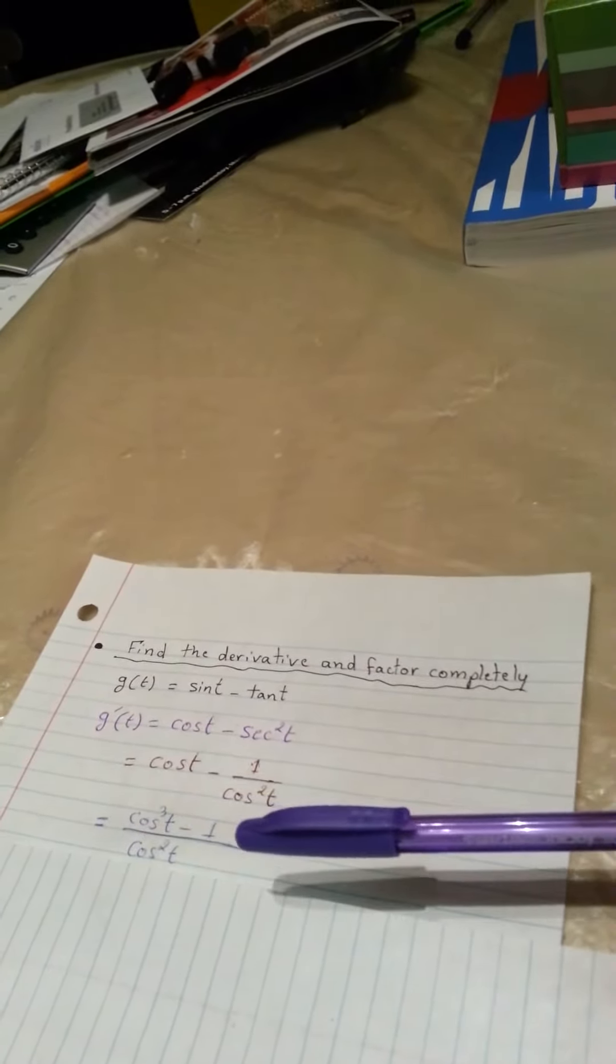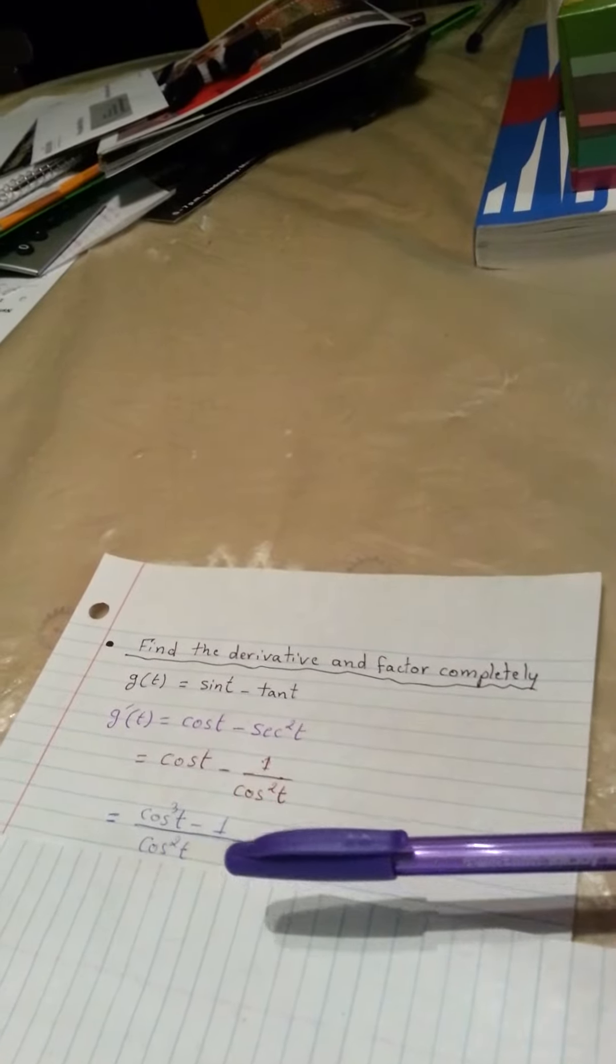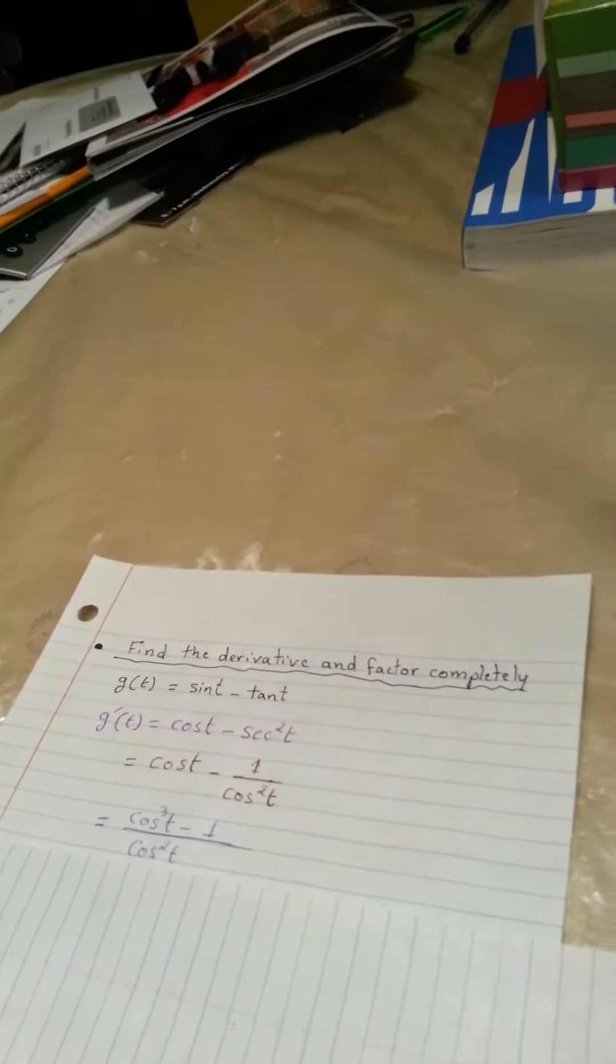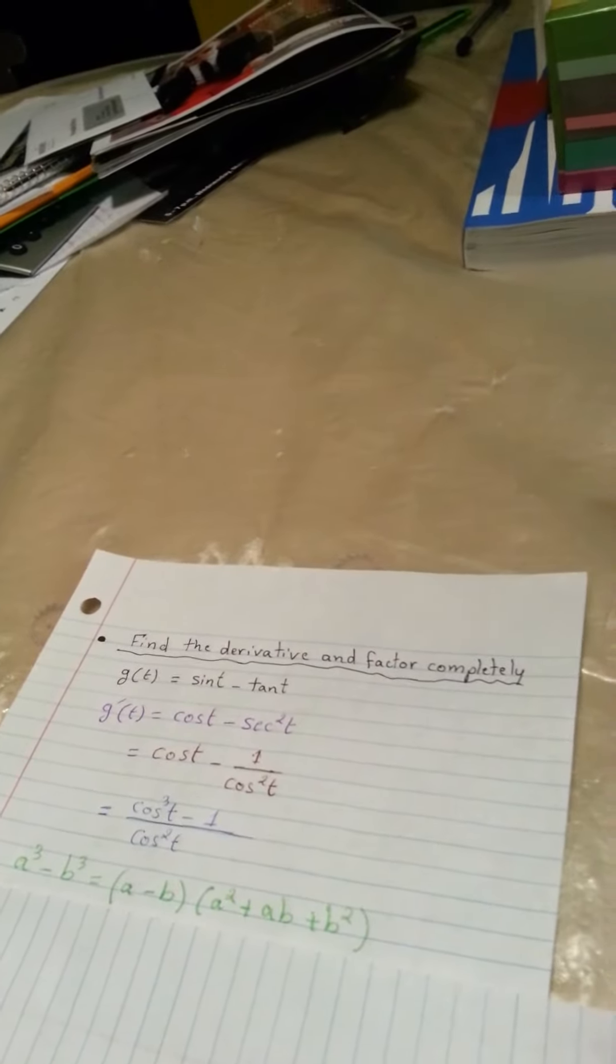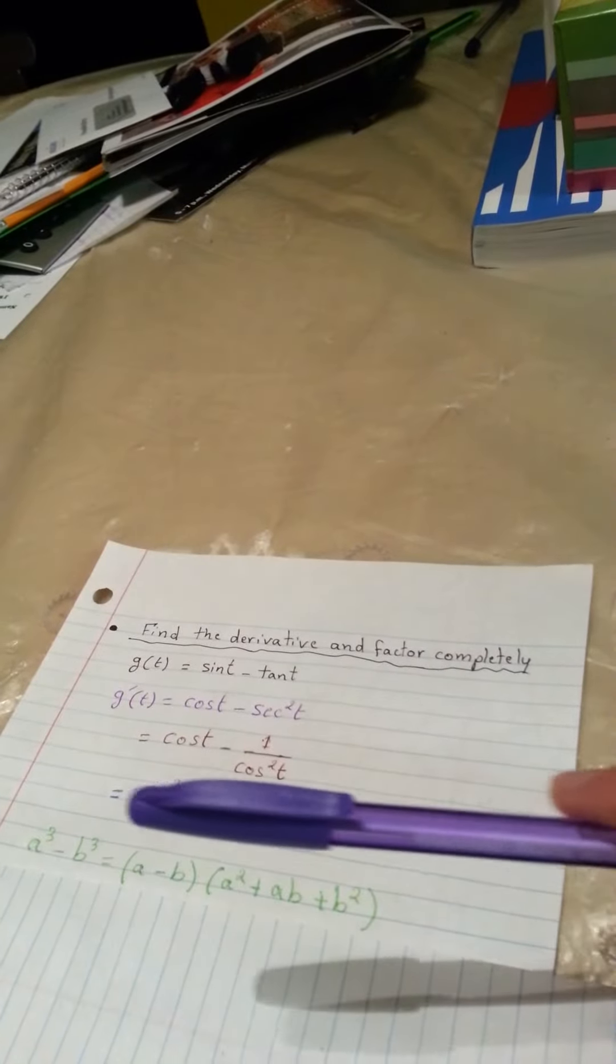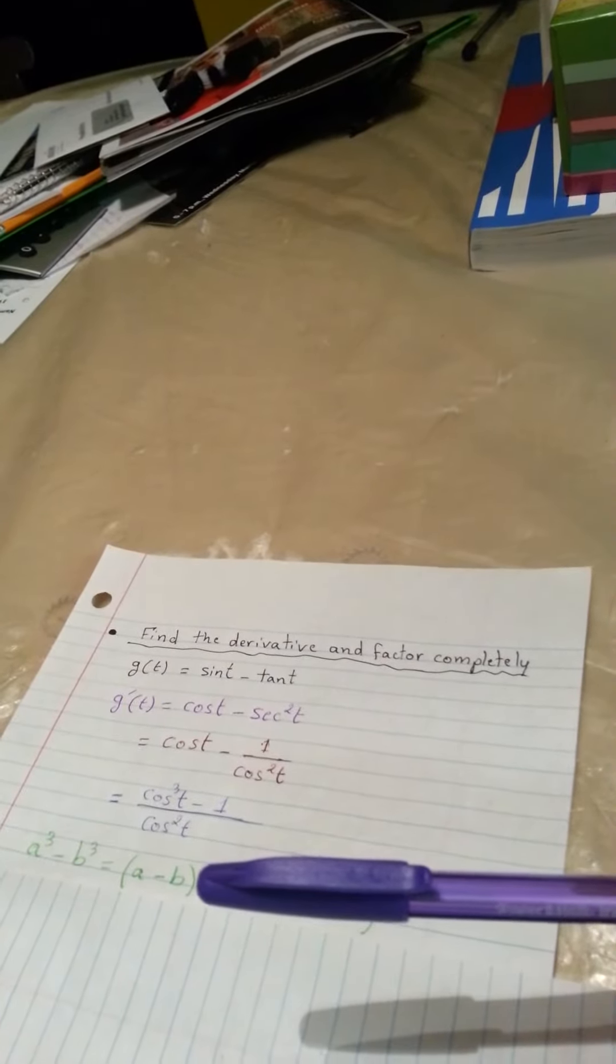Cosine cubed t minus 1 over cosine squared t. Next, we notice on the numerator the factoring formula of a cubed minus b cubed equals a minus b times a squared plus ab plus b squared.